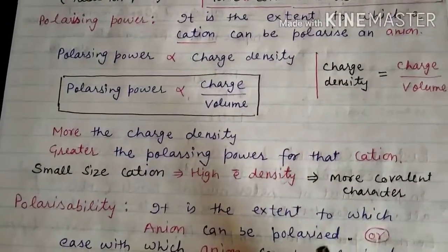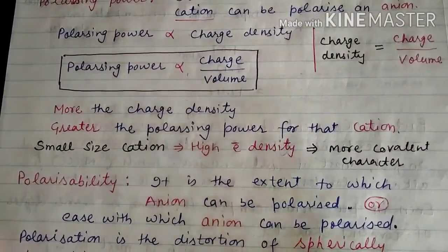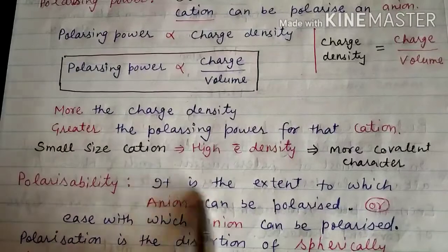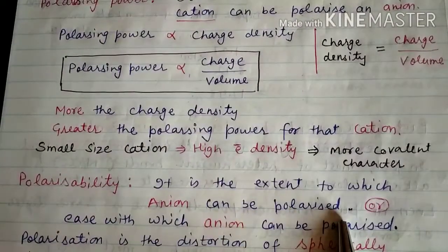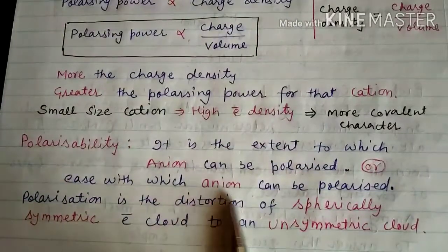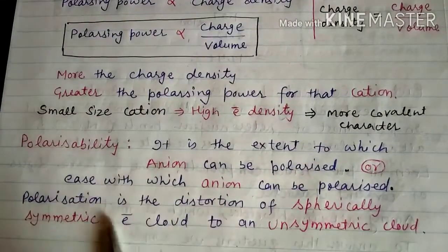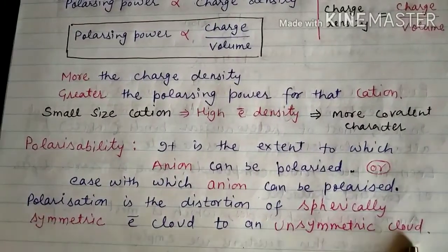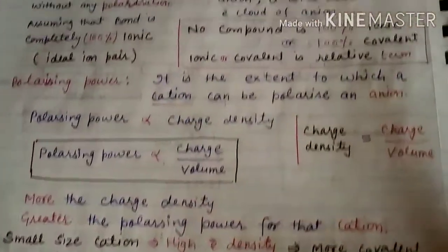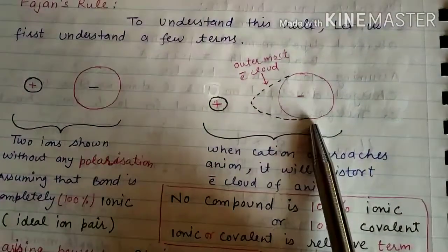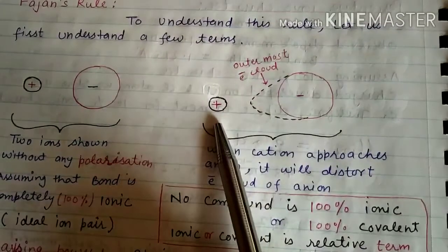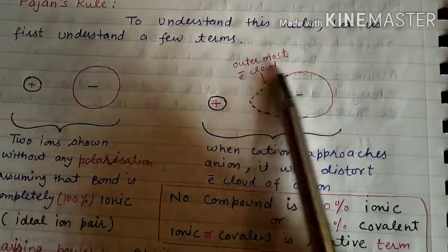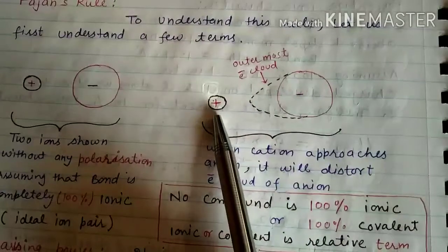Another term is polarizability. Remember: polarizing power is for cations, and polarizability is for anions. Polarizability is the extent to which an anion can be polarized, or the ease with which an anion can be polarized. Polarization is the distortion of the spherically symmetrical electron cloud to an unsymmetrical cloud. You can see here: this anion is being polarized by the polarizing power of the cation, causing a distortion in the electron cloud.